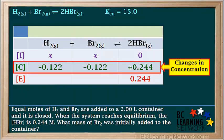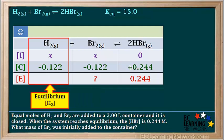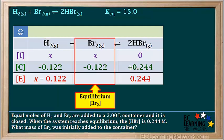So now we have the changes in concentration for all three species as the system moves from its initial state to equilibrium. To establish equilibrium, the reaction moves to the right, and the concentrations of H2 and Br2 both go down by 0.122 molar, while the concentration of HBr goes up by 0.244 molar. Our next step is to find the equilibrium concentrations of H2 and Br2. Remember, equilibrium concentration is initial concentration plus change in concentration. So the equilibrium concentration of H2 will be x plus negative 0.122, or simply x minus 0.122. Similarly, the equilibrium concentration of Br2 will also be x minus 0.122.